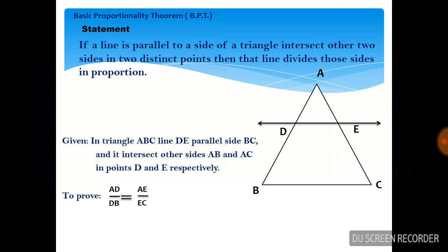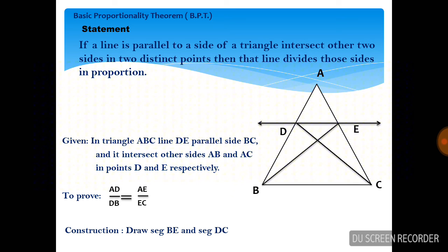For proving this theorem we need some construction. We have AD and DB; AD is the base of triangle ADE, but we don't have another triangle with DB as a base. So we will join BE to get a triangle with base BD. Similarly, for the ratio AE upon EC, EC is not the base of any triangle, so we will join DC. Construction: draw segment BE and segment DC.